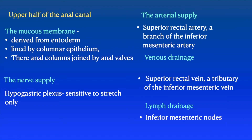In the upper half of the anal canal, the mucous membrane is derived from entoderm and is lined by columnar epithelium. There are anal columns — folds of mucosa joined at the bottom by semicircular folds called anal valves. The nerve supply is through the hypogastric plexus, making it sensitive only to stretch. The arterial supply is from the superior rectal artery, a branch of the inferior mesenteric artery. The venous drainage is to the superior rectal vein, a tributary of the inferior mesenteric vein draining into the portal vein. Lymphatic drainage is into the inferior mesenteric nodes.